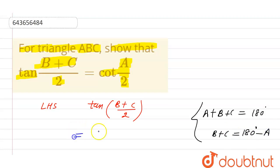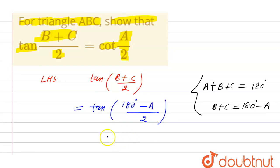Now we can put the value of B+C here: tan of (180 degrees - A)/2. Now we can separate the terms here.